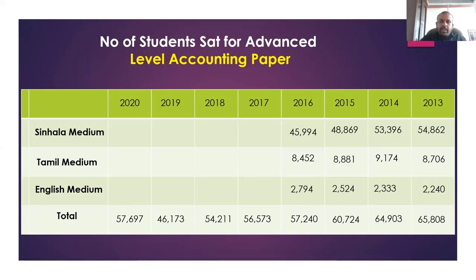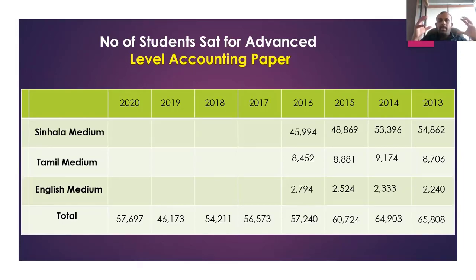In 2019 it was 46,000; in 2018, 54,000. It fluctuated around 55,000–57,000 in 2017 and 2016. In 2015 it was 60,724; in 2014 it was 64,000; and in 2013 it was 65,000. That is the number of students who participate in the Advanced Level accounting paper.